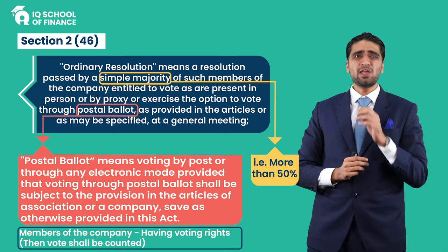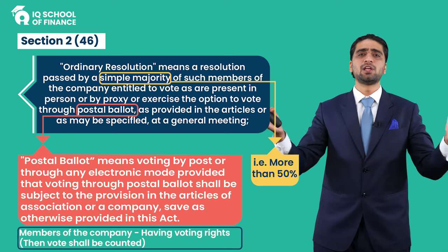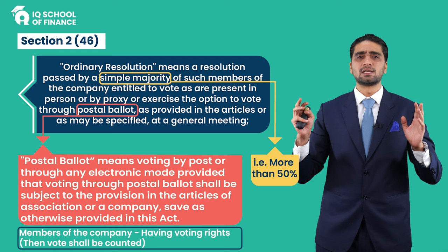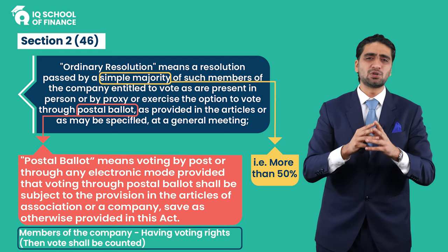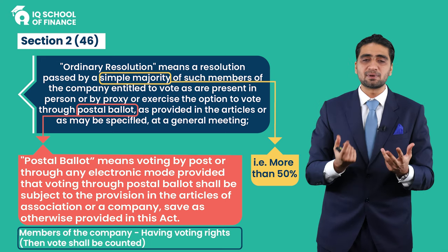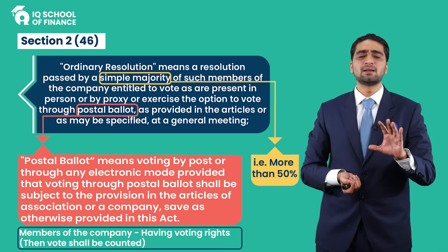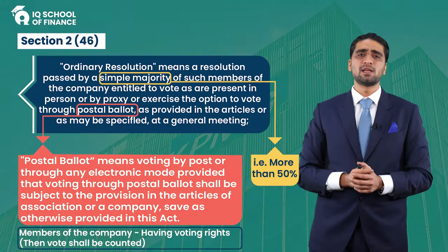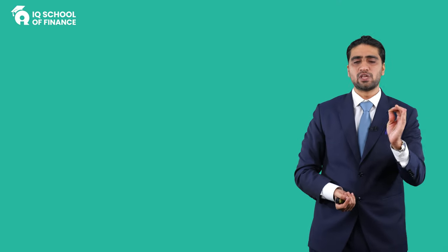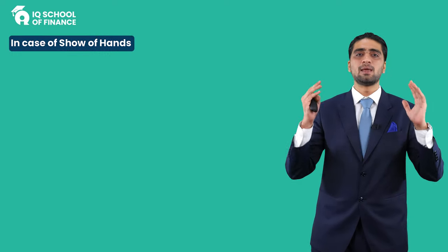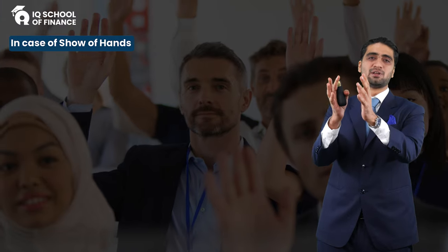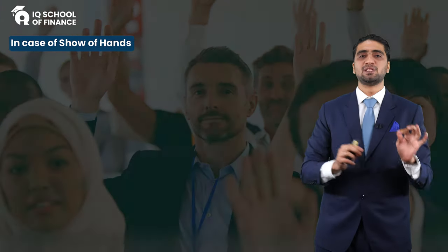First of all, consider this company. This is an AGM — the annual general meeting — and shareholders are present in a hall, like a Movenpick or Sheraton or PC hotel, full of members. How will you know that the majority is a simple majority? For example, we have to assess whether to appoint KPMG or not — with members' approval. The first method is show of hands. The chairman will see how many people raise their hands in favor. When they raise hands, the director sees the majority. The resolution passes — KPMG will be the auditor of the company.